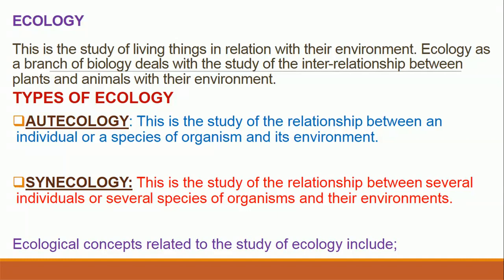There are two branches of ecology. The first is called autecology. Autecology is the study of the relationship between an individual or a species of organism and its environment. The focus here is an individual or a species. For example, if an ecologist decided to study a dog and how it relates with its environment, or studied the human species and the relationship that exists between them and the environment, that study is called autecology.